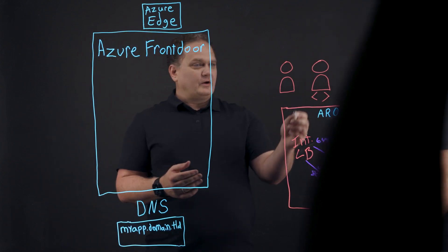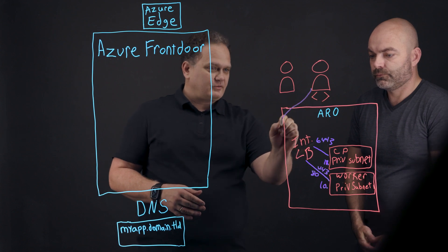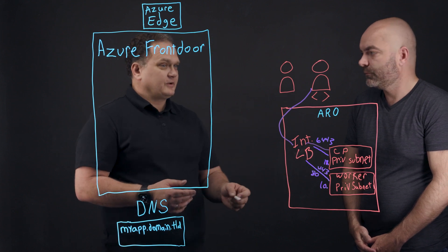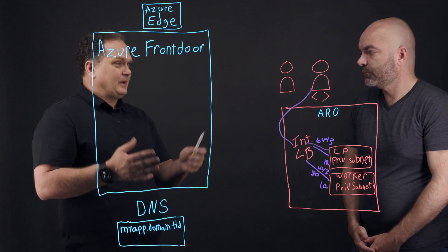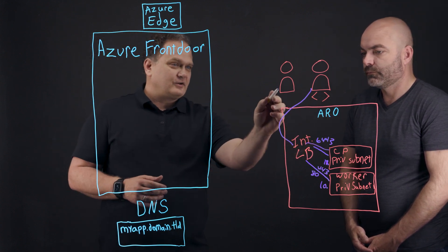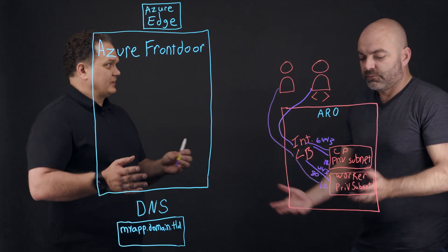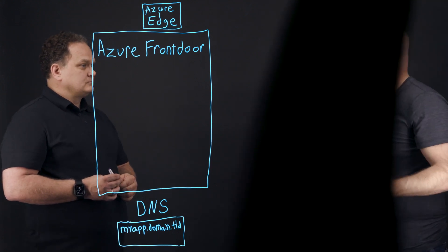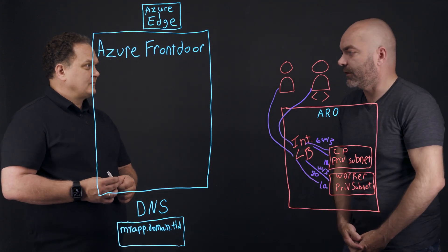If you look at this as a developer or someone from your operations team interacting with the cluster, they're going to go through the load balancer to the control plane. And if you have application users — your end users of your internal application — remember, this is all within your own corporate network, there's no connectivity outside. They're going to go through the internal load balancer on port 80 or 443. So if we're hosting a corporate intranet, an intranet user would go through and access the application hosted on the OpenShift cluster itself.